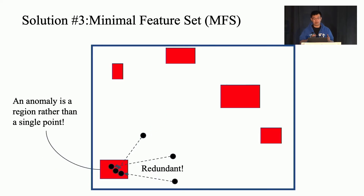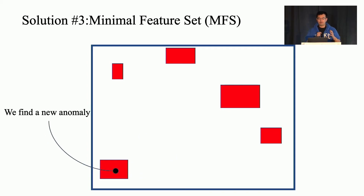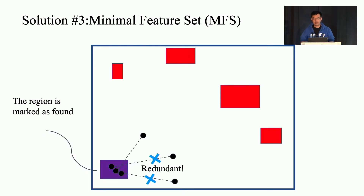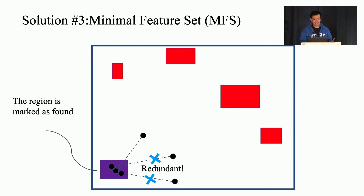In addition, since a performance anomaly usually happens to a region of workloads rather than a single point, if we only use simulated annealing, the algorithm may get stuck in a region and repeatedly test points in the same anomalous region. To address this, we invent a minimal feature set algorithm. When we find a new anomaly, we conduct a few tests on the anomaly point for each dimension — for example, changing the transport type from unreliable datagram to reliable connection and testing again. By conducting a few tests, we can mark a region instead of a single point, calling it a minimal feature set. When simulated annealing next picks a point belonging to an existing minimal feature set region, it avoids redundant tests and searches untested points instead, further improving efficiency.